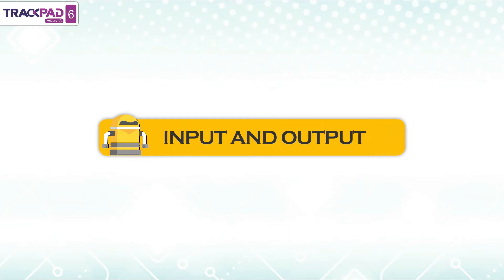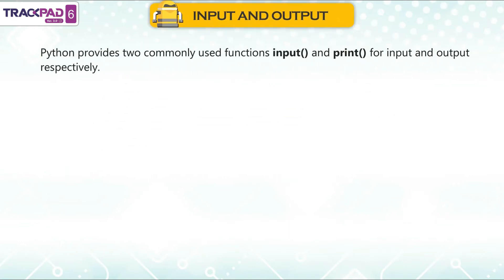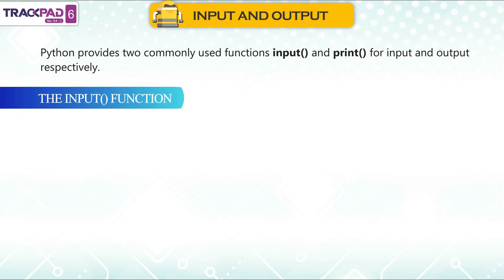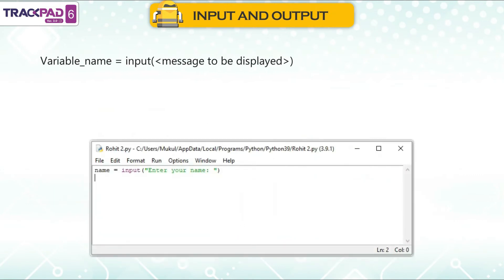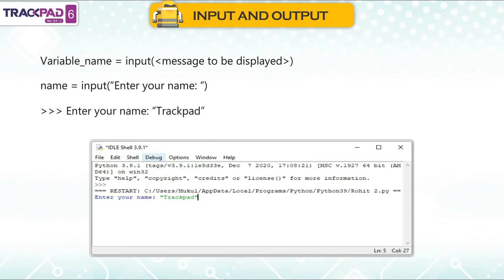Input and output: Python provides two commonly used functions — input and print — for input and output respectively. The input function is used to take the user's input while a program executes. It also evaluates the expression whether the user has entered a string, number, or list. The general syntax is: variable_name = input(message to be displayed). For example: name = input("Enter your name:").